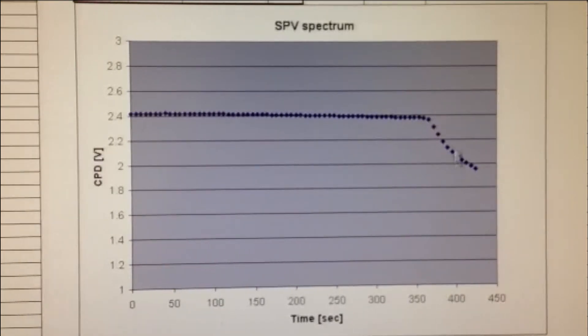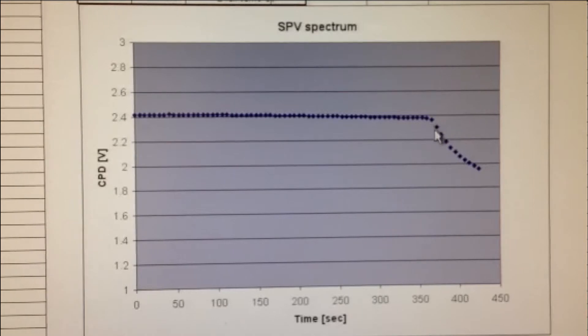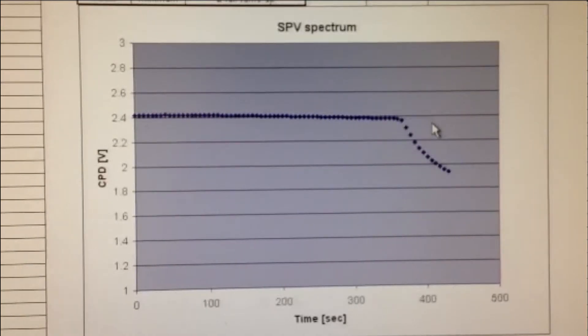When the photon can be absorbed by the material, charge carriers are created and separated. Therefore, a change in CPD value can be observed.